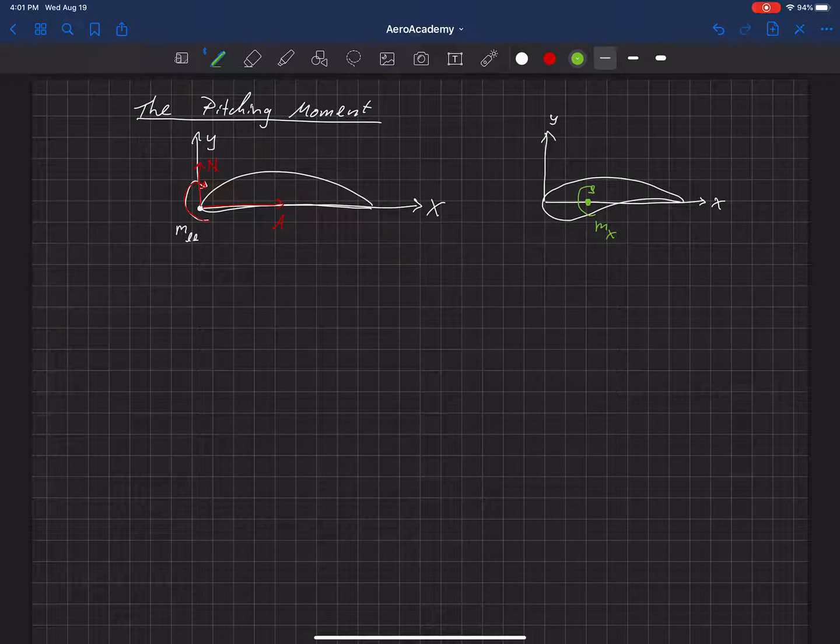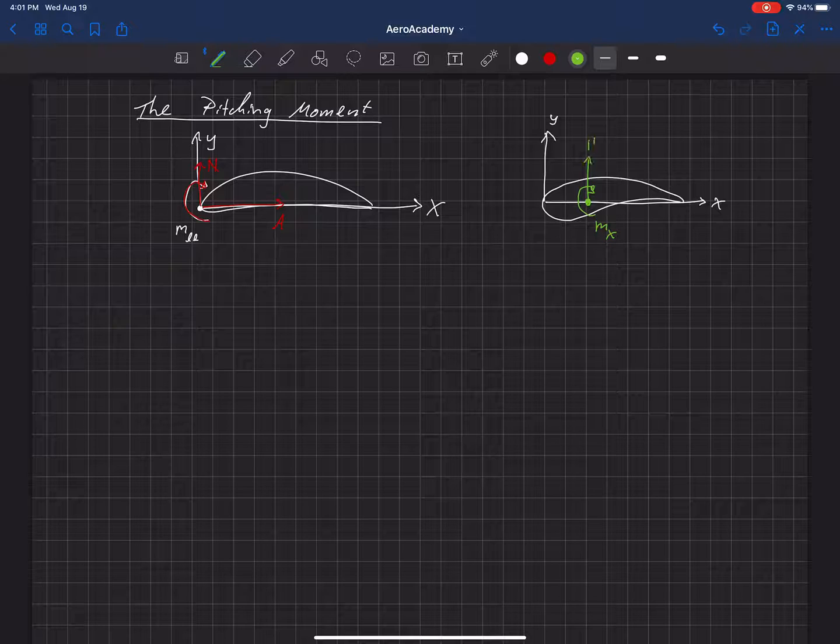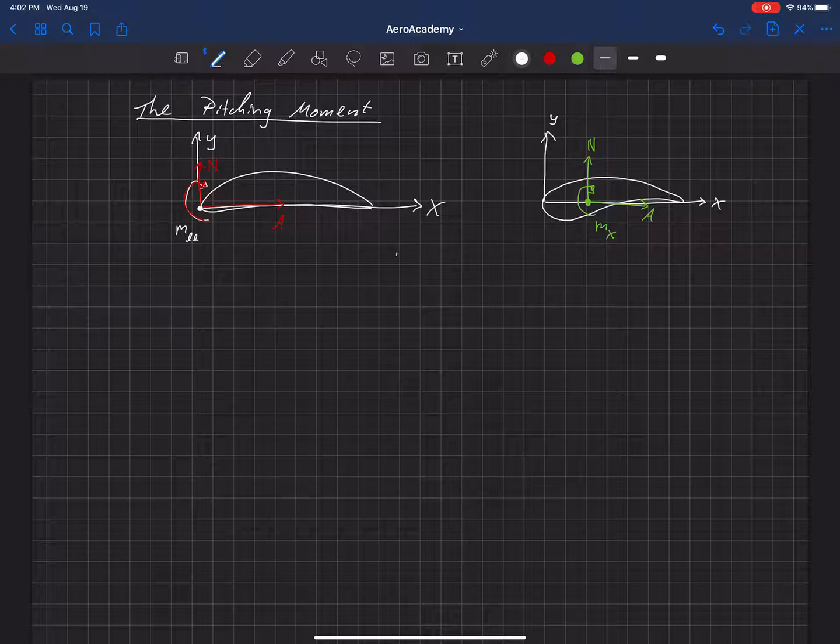But then we also have a normal force and an axial force. Now, it turns out that the red and the green normal forces are equal, because once you integrate those pressure and shear forces, there's only a certain magnitude in the Y direction, and there's a certain magnitude in the X direction. So the normal forces and the axial forces are equal between these two. The normal force and the axial force are equal.